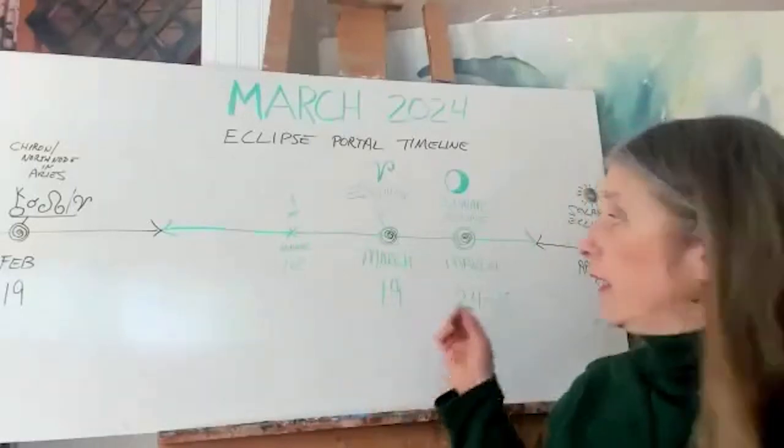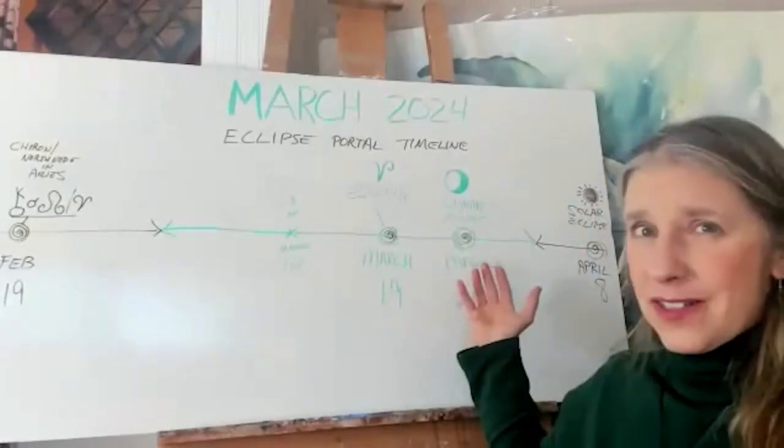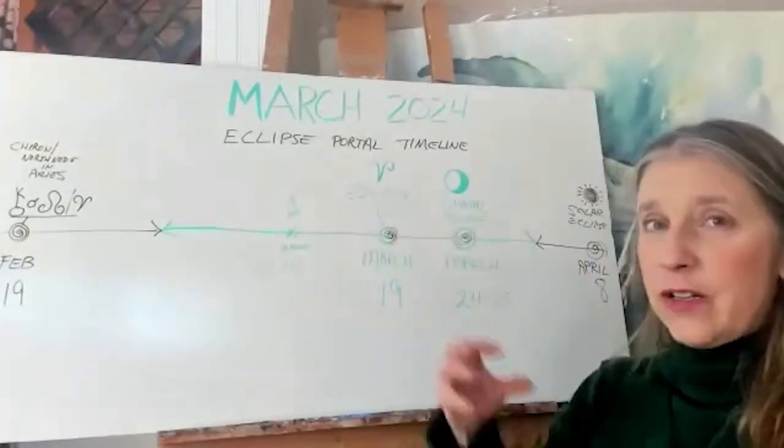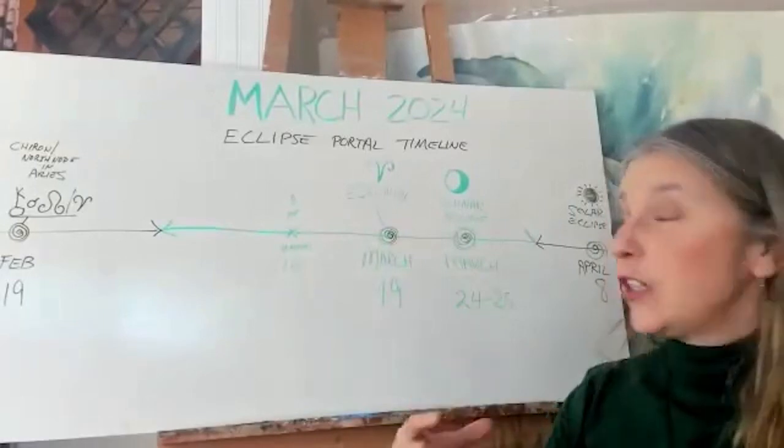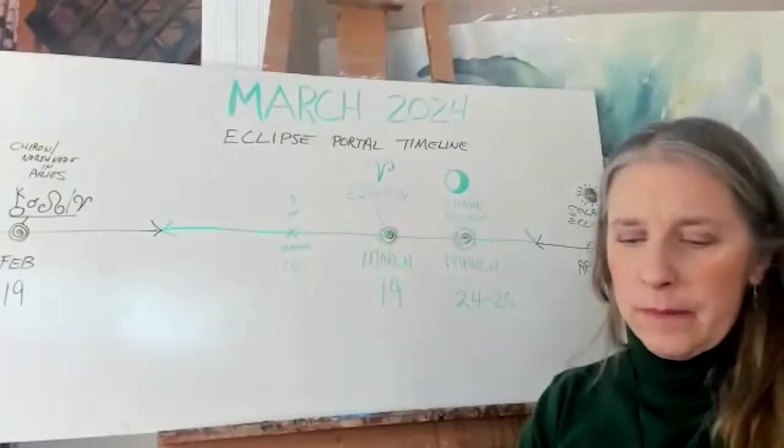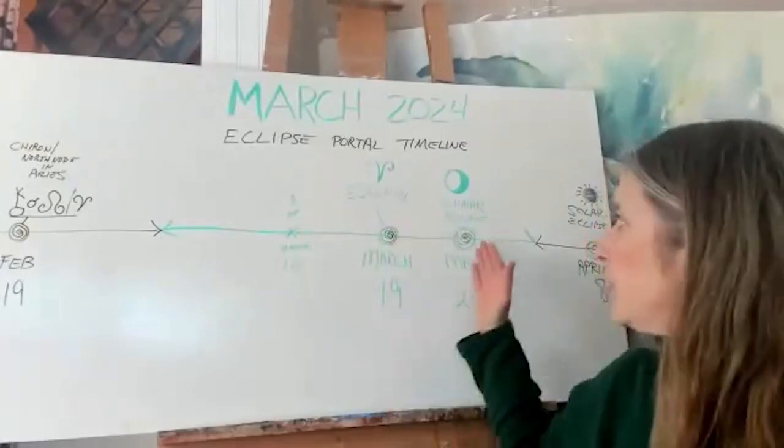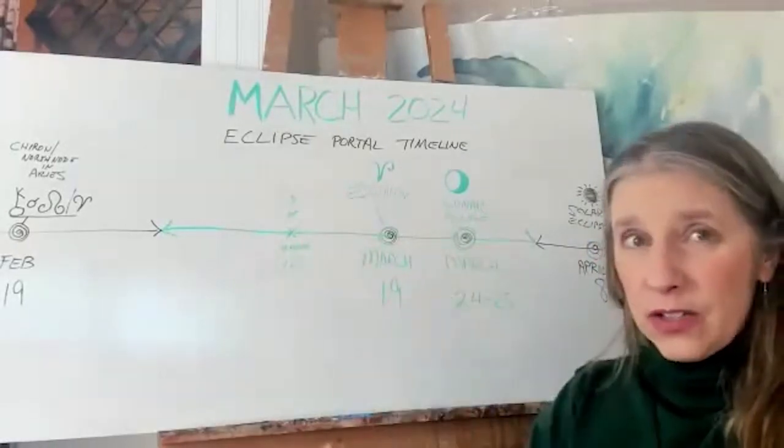I was looking clairvoyantly at this month of March and when I tuned in I was really drawn to these energies of the lunar eclipse. I saw this figure standing in a doorway.